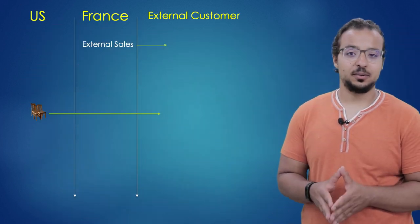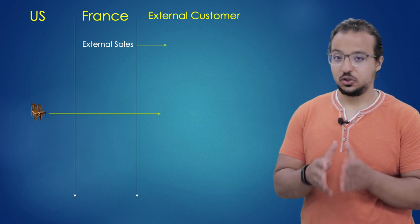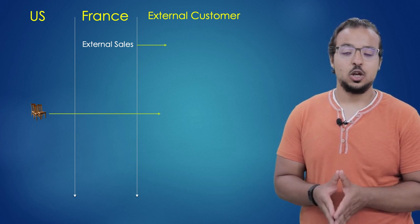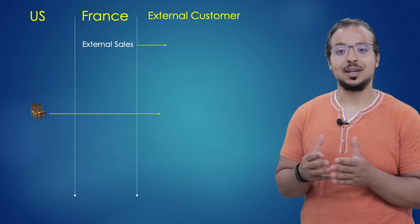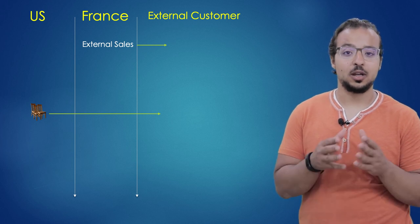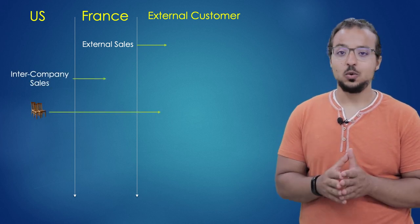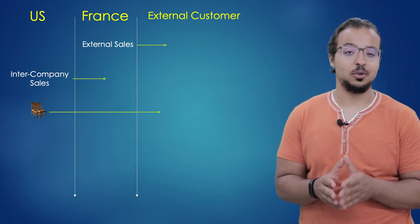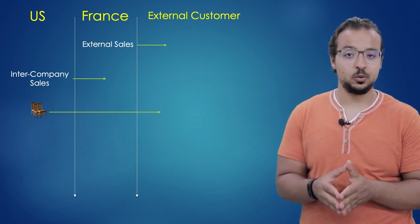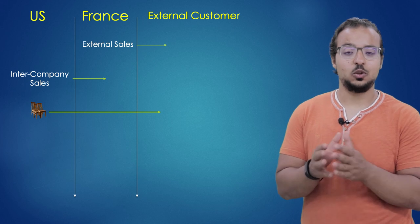Let's go back to our example. We have two sister companies — one in the US and another in France — and we have an external customer in France who would like to buy one of our products. But the product only exists in the US. So the company in France is going to create a sales order to sell this product to the customer in France, but is going to ship this product from our company in the US. This is an intercompany process that actually includes two processes: one sales process in the background between the US company and the France company, and the other sales process in the foreground from France to the external customer.